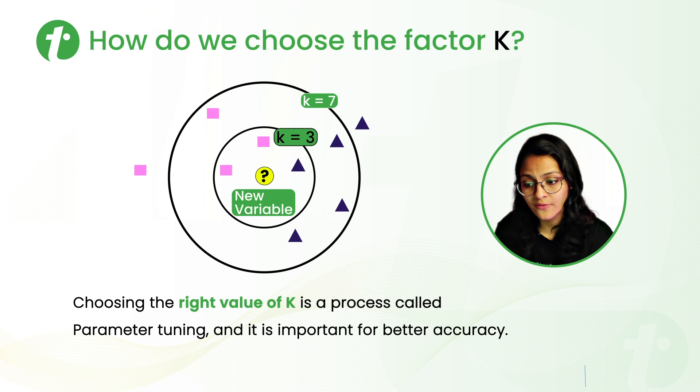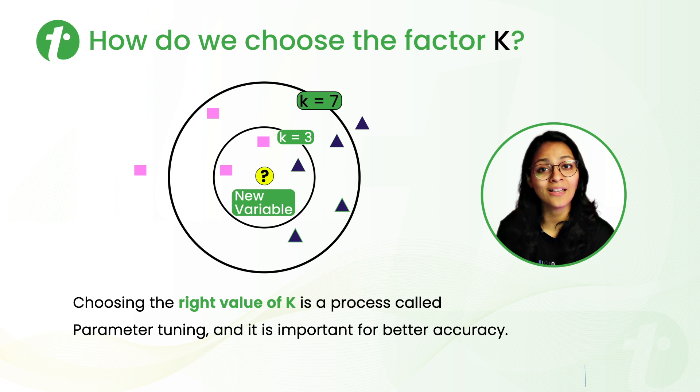And if I consider the value of K as 7, then there are three rectangles and four triangles. That means in this case, it will belong to the triangle category. I hope now you understand why choosing the right value of K is so important. And the process of choosing the right value of K is called parameter tuning.